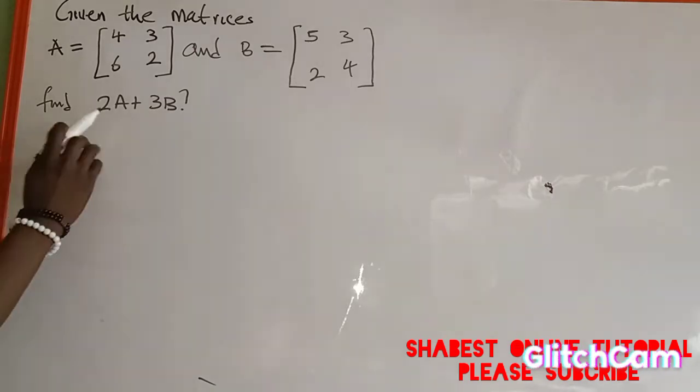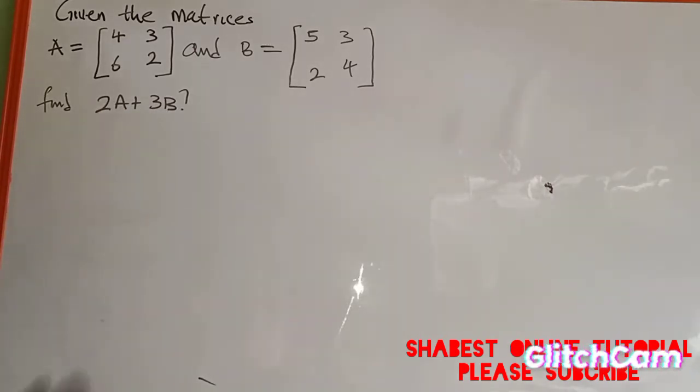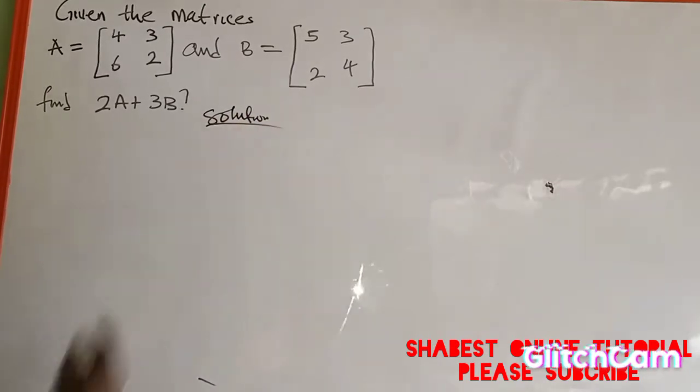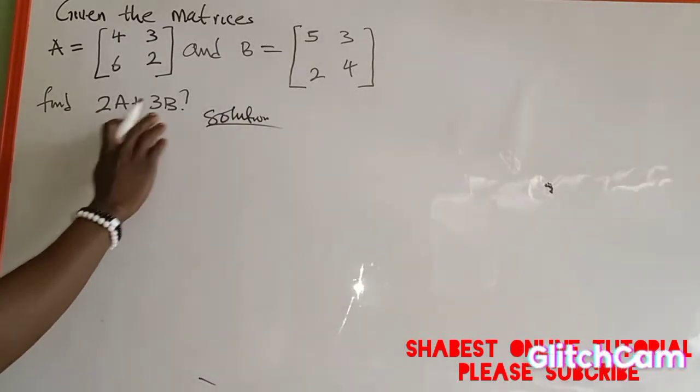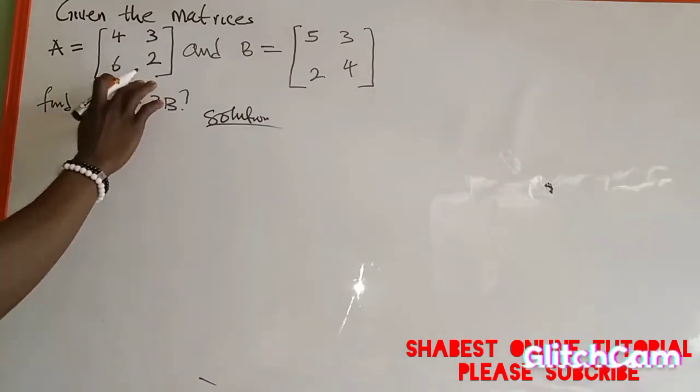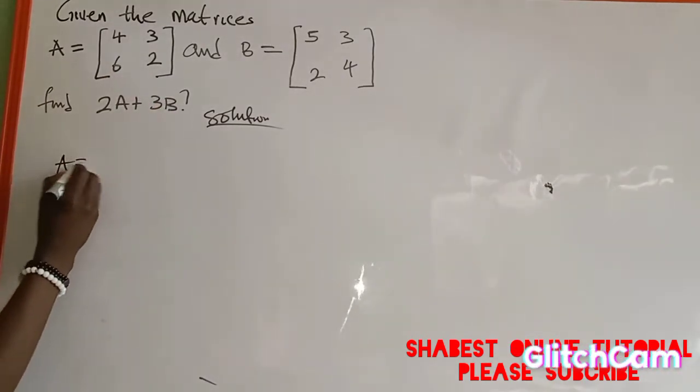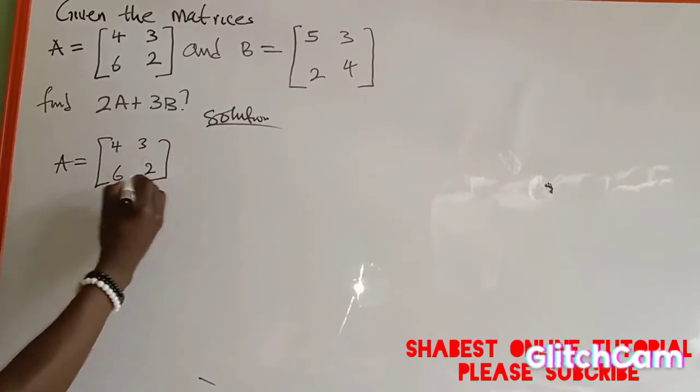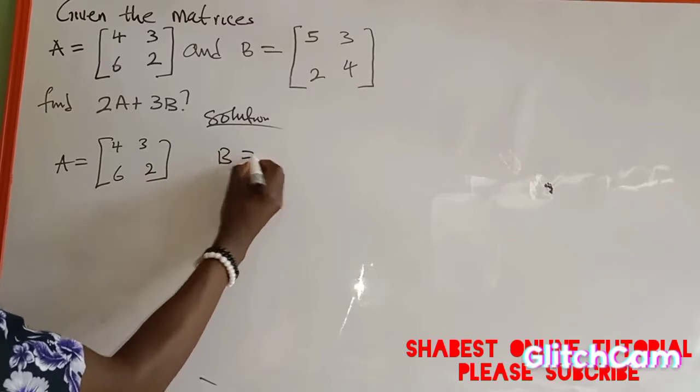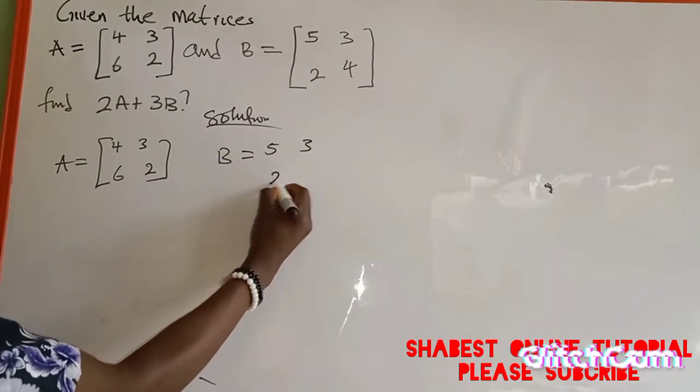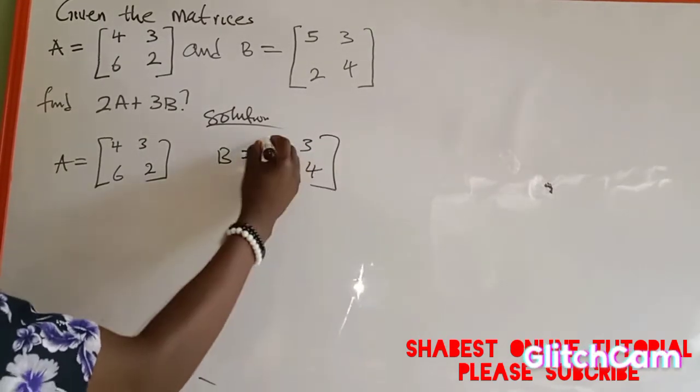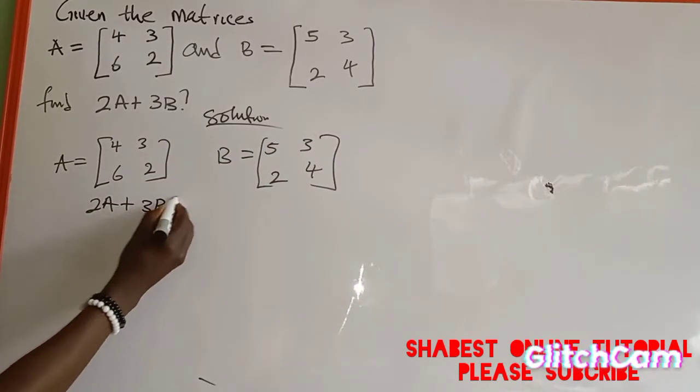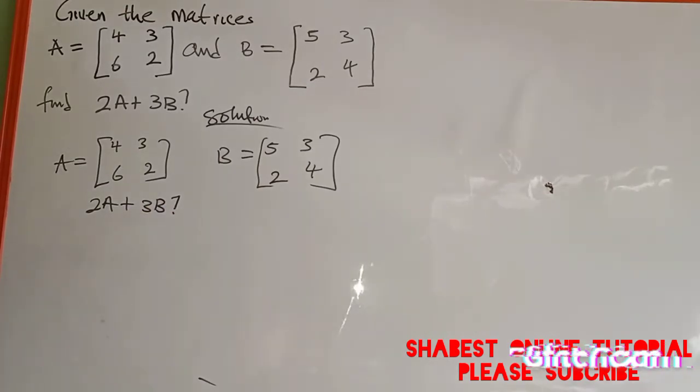Solution: The matrix we are asked to find is 2A plus 3B. From the above question, matrix A is equal to 4, 3, 6, and 2, and matrix B is equal to 5, 3, 2, and 4. So we are asked to find 2A plus 3B.